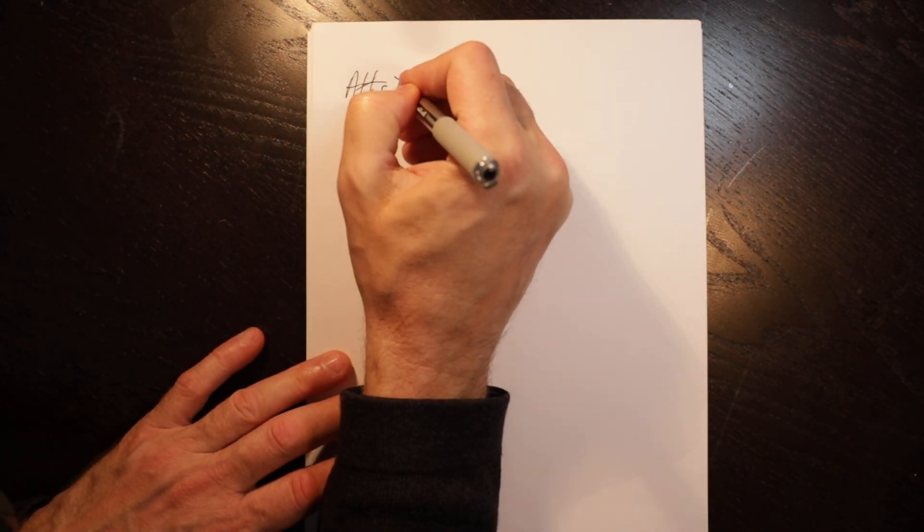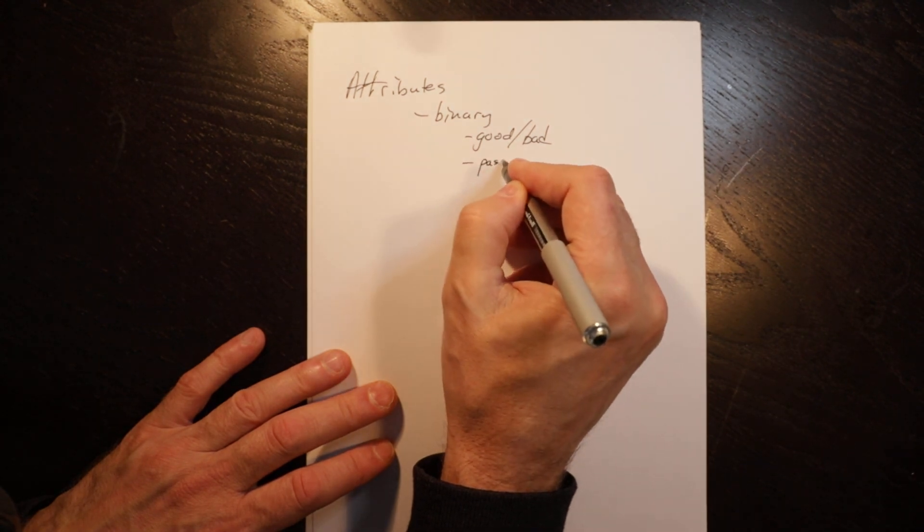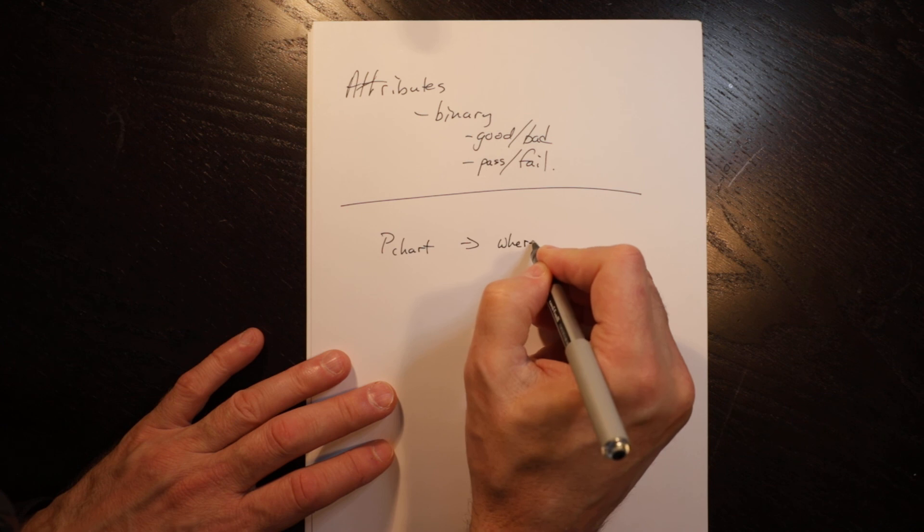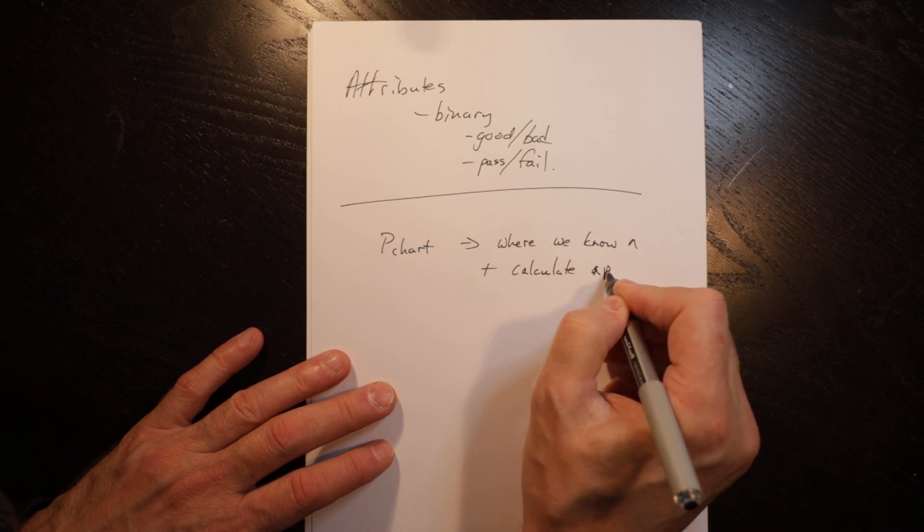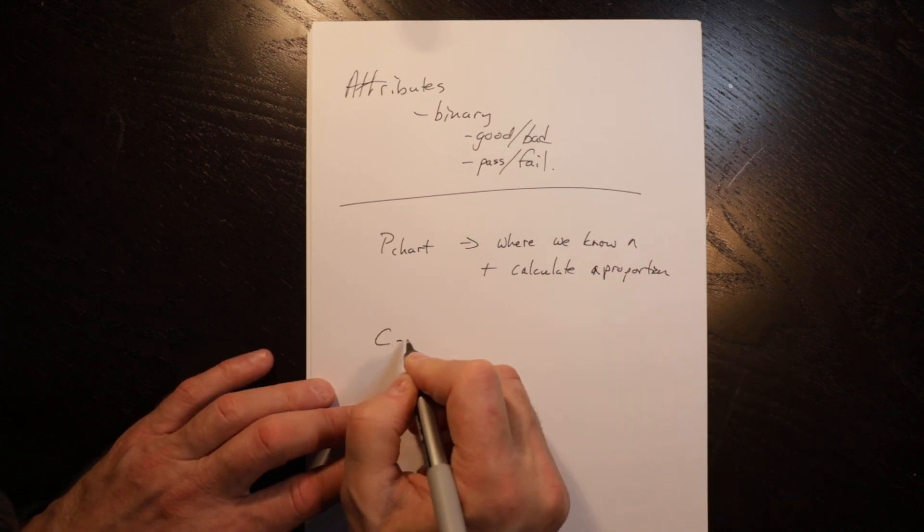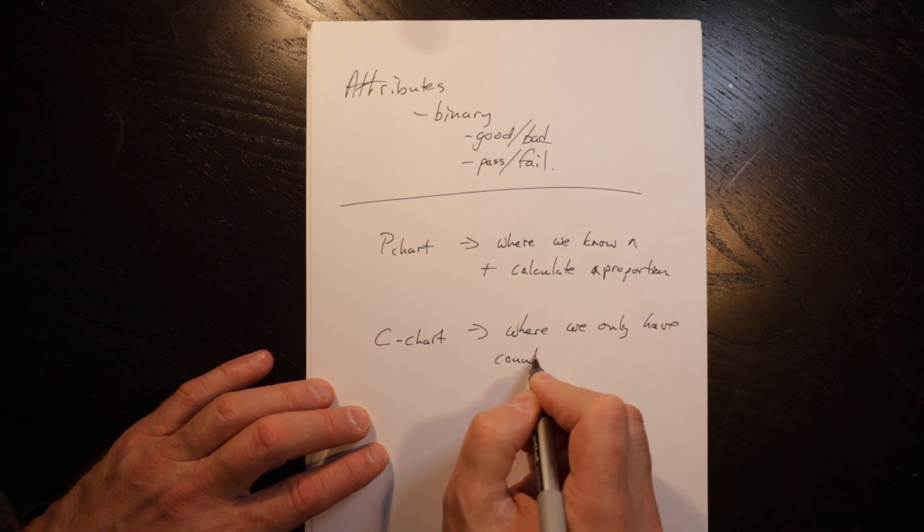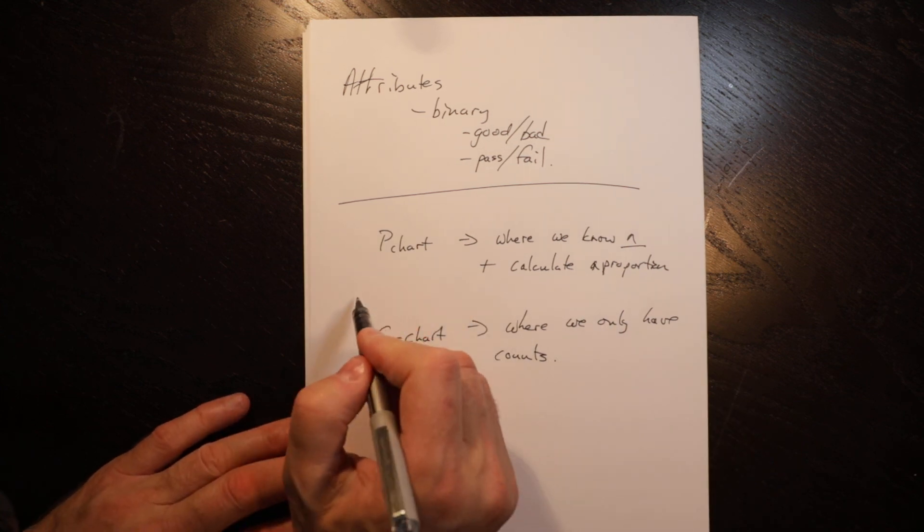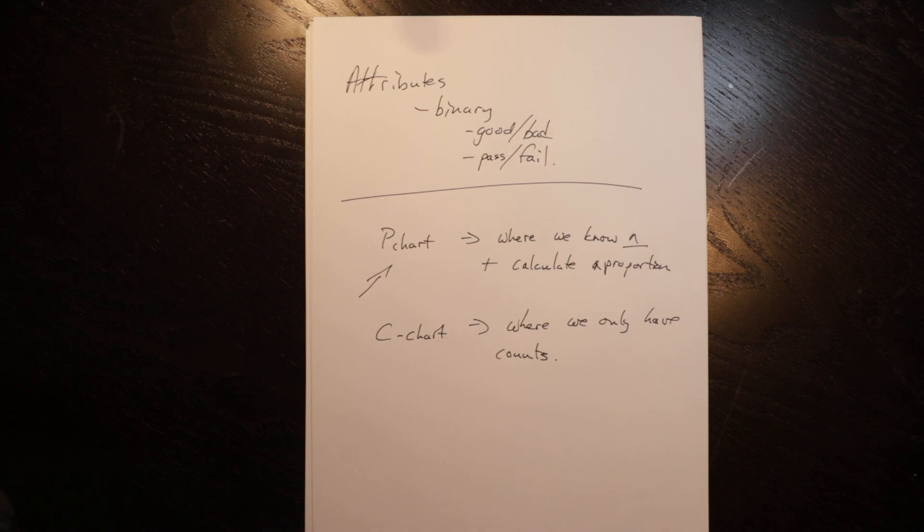So just to wrap up, we have attributes, binary, good, bad, pass, fail. If that is, then we develop either a p-chart where we know n and can calculate a proportion, and a c-chart where we only have counts. Relatively straightforward, the only tricks are knowing that you have an attribute and then figuring out what n is. If you know what n is, a p-chart is the preferred approach. You can't just default to a c-chart. Relatively straightforward, good luck and ask if you have any questions.